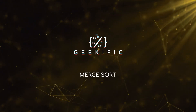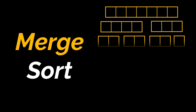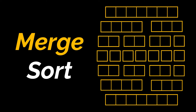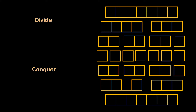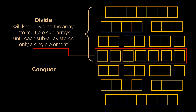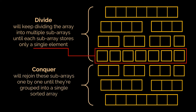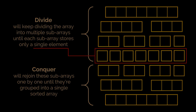Welcome to the channel. If you've been watching our previous sorting algorithm videos, by now you might expect us to cover one of the most efficient amongst them, and that is exactly what we are going to do in this video. We are going to explain, discuss, and implement the merge sort algorithm. The sorting algorithm consists of two major steps: divide and conquer. The divide step will keep dividing the array into multiple subarrays until each subarray stores only a single element. The conquer part will rejoin these subarrays one by one until they are grouped into a single sorted array.